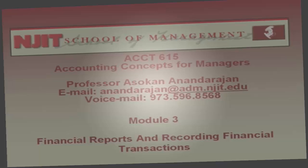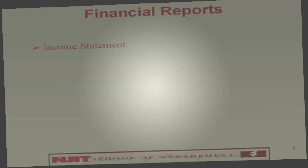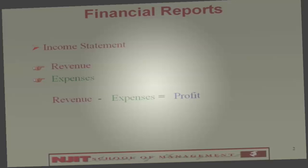In accounting, we prepare three types of reports, published in what's called an annual report. The first report is the Income Statement. An Income Statement has revenue and expense. We subtract expense from revenue to arrive at profit. Profit is also called net income. The equation is: revenue minus expense equals profit.